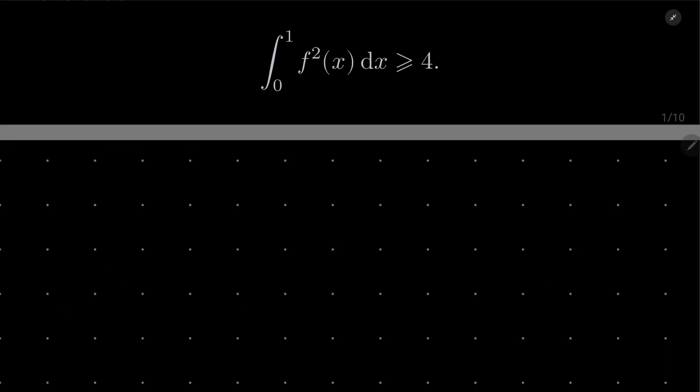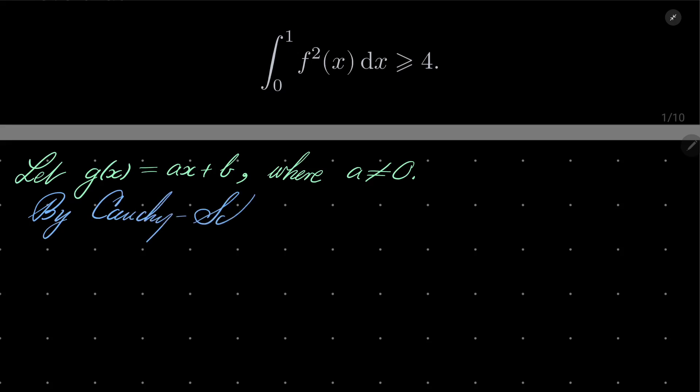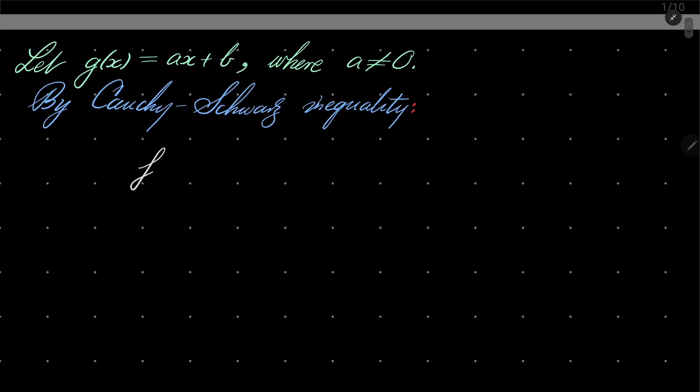Okay, so here is my solution. Let g of x equal ax plus b where a is non-zero. By Cauchy-Schwarz inequality, the integral from 0 to 1 of f squared of x dx times the integral from 0 to 1 of ax plus b squared dx is always greater than or equal to the integral from 0 to 1 of ax plus b times f of x dx, quantity squared.